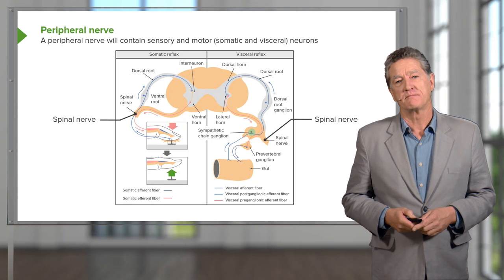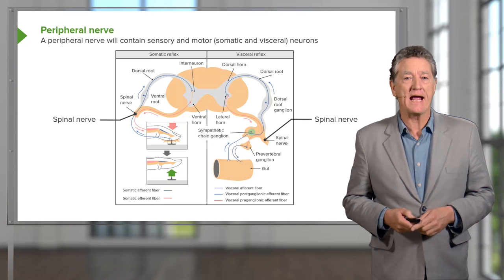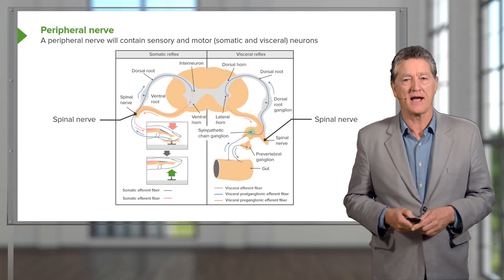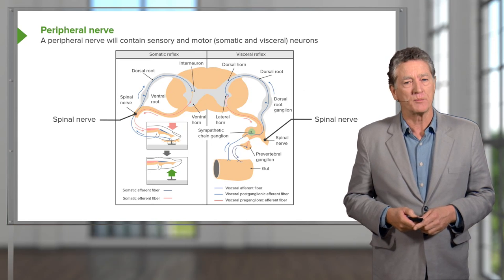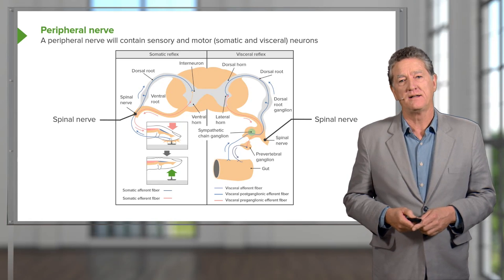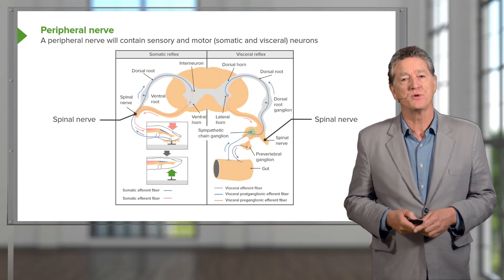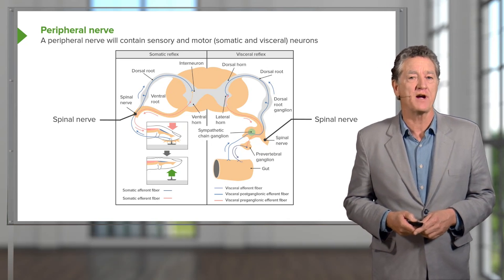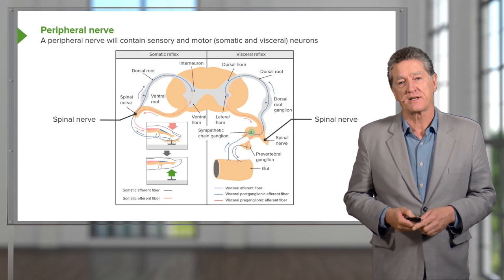It then synapses with the post-ganglionic neuron in that ganglion. And that post-ganglionic neuron then passes, usually following blood vessels, to where those neurons are going to do their job — where they're going to stimulate smooth muscle, perhaps to contract around blood vessels or around parts of the gut.